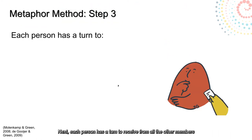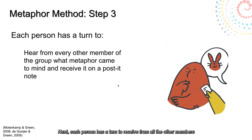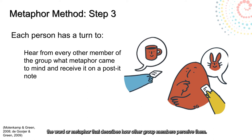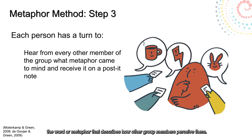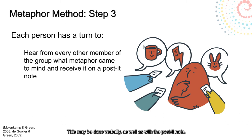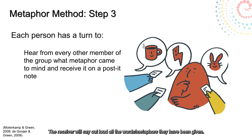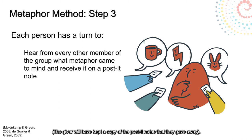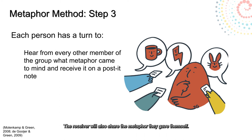Next, each person has a turn to receive from all the other members the word or metaphor that describes how the group members perceive them. This may be done verbally as well as with the post-it note. The receiver will say out loud all the words and metaphors that they have been given. The giver will have kept a copy of the post-it notes that they gave away. The receiver will also share the metaphor that they gave themselves.